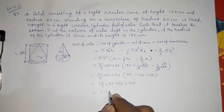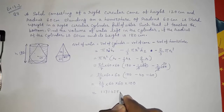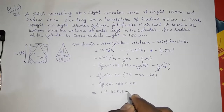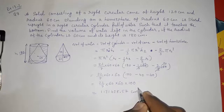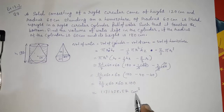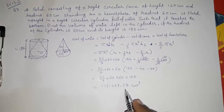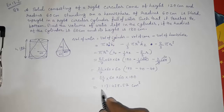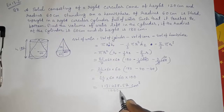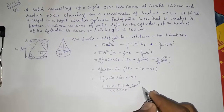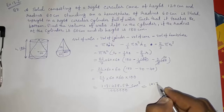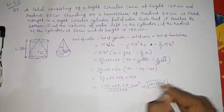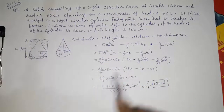The answer comes out to approximately 1,131,428.57 cm³. Everything is given in centimetres so the volume is in centimetre cubed. If we want to convert it to metre cubed, we divide by 10,00,00,000 — that is 6 zeros — and we get approximately 1.131 metre cubed.